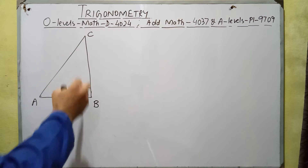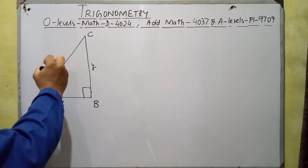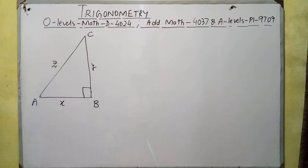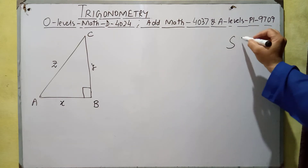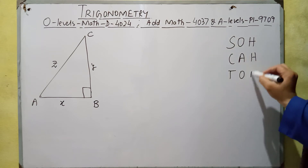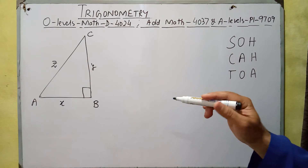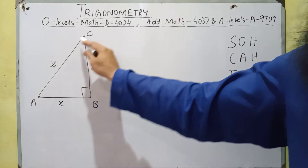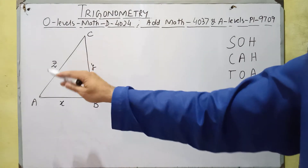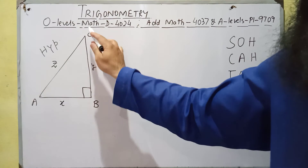Let's suppose this is a right angle triangle ABC, where this side is X, this side is Y, and this side is Z. In a right angle triangle we use a shortcut called SOH-CAH-TOA. In all types of right angle triangles, the side which is opposite to the 90 degree angle is called the hypotenuse. This side AC, or Z, is called the hypotenuse.